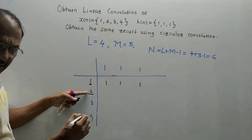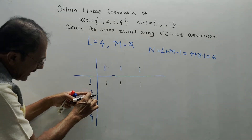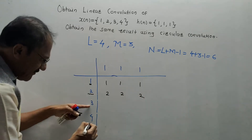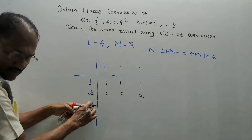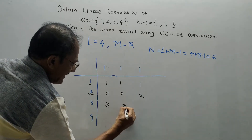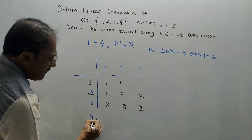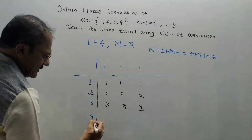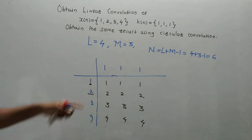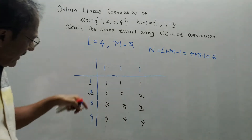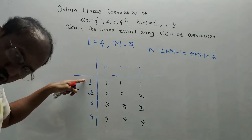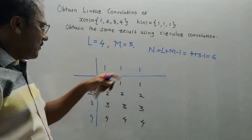Consider the second term, 2: multiply each term of h(n) by 2 to get 2, 2, 2. Then the third term, 3: multiply each term to get 3, 3, 3. Same way, multiply every term by the last element, 4, to get 4, 4, 4. So each sample of x(n) multiplies each element of h(n), filling the table row by row.